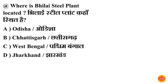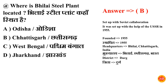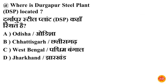Next question: where is the Bhilai Steel Plant located? Bhilai Steel Plant kahan sthit hai? Option B is correct — Chhattisgarh. Bhilai Steel Plant sthapit hua 1955 mein aur headquarters hai Bhilai, Chhattisgarh. District hai Durg district. Bhilai Steel Plant Chhattisgarh ke Durg district mein sthit hai.